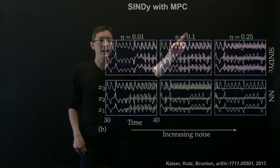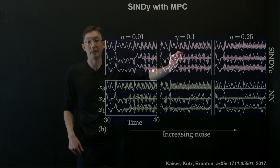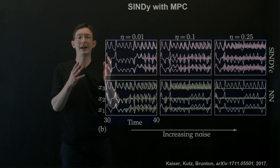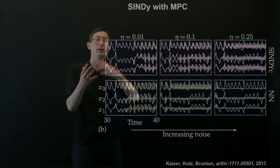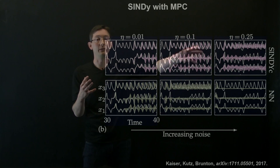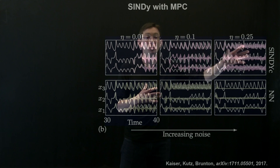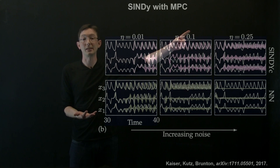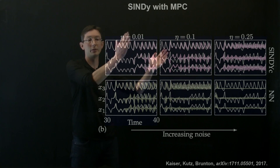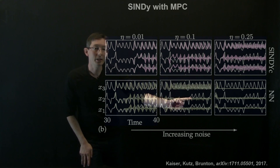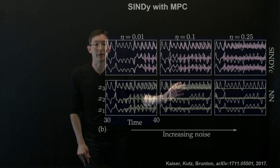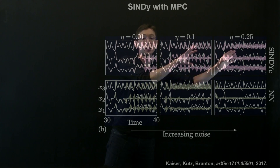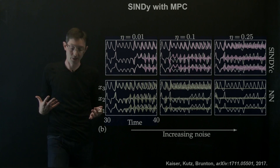As I increase the noise, the SINDYc model starts to disagree with the true model more rapidly. But the qualitative dynamics — the lobe switching and time spent on each lobe — are actually qualitatively captured quite well by the SINDYc model even for large noise. So even with large noise, the SINDYc model is qualitatively capturing the right dynamics; it's just that the chaotic nature causes the two systems to diverge earlier in time. But you'll notice that as noise increases, the neural network model gets worse and worse — the qualitative aspect of the neural network model is degrading over time with increasing noise, even though the SINDYc model is still capturing these dynamics.